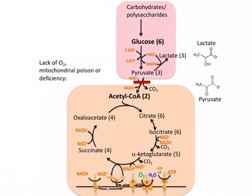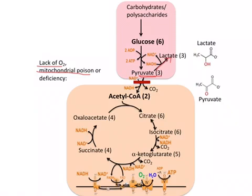Anything that inhibits the electron transport chain — such as lack of oxygen, mitochondrial poisoning like cyanide or carbon monoxide, a deficiency of mitochondria, or red blood cells not having any mitochondria — causes pyruvate to be reduced to lactate by lactate dehydrogenase instead of being converted to acetyl-CoA. This reoxidizes the NADH and allows glycolysis to continue. Under normal conditions, this lactate can be taken up by other cells and oxidized, or taken up by the liver and converted to glucose by gluconeogenesis. However, if there's a systemic problem of oxygen delivery, mitochondrial poisoning, or enzyme deficiency, lactate can build up and cause lactic acidosis.